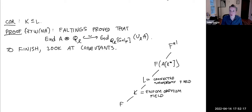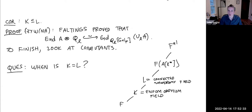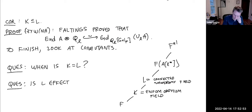If you're like me, you want to know what these fields are in specific examples, and whether K = L always. One can ask: is L itself effectively computable? There is work by David Zywina, under the Mumford–Tate conjecture, that proves L can be computed — I believe there's a deterministic algorithm there.